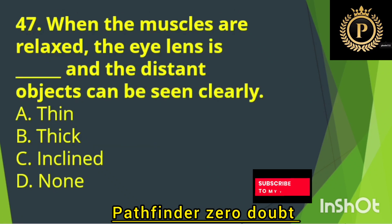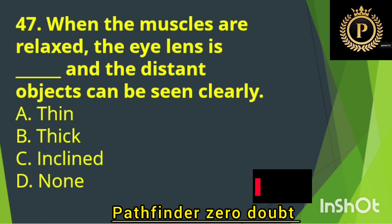When the muscles are relaxed, the eye lens is thick and distant objects can be seen clearly — Option B: Thick.